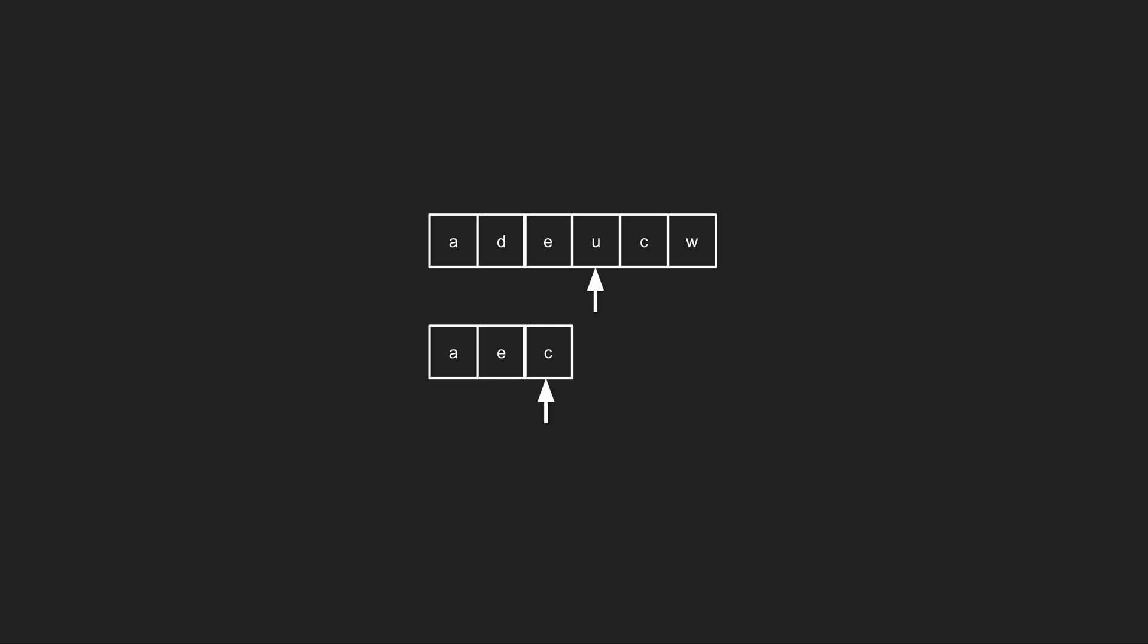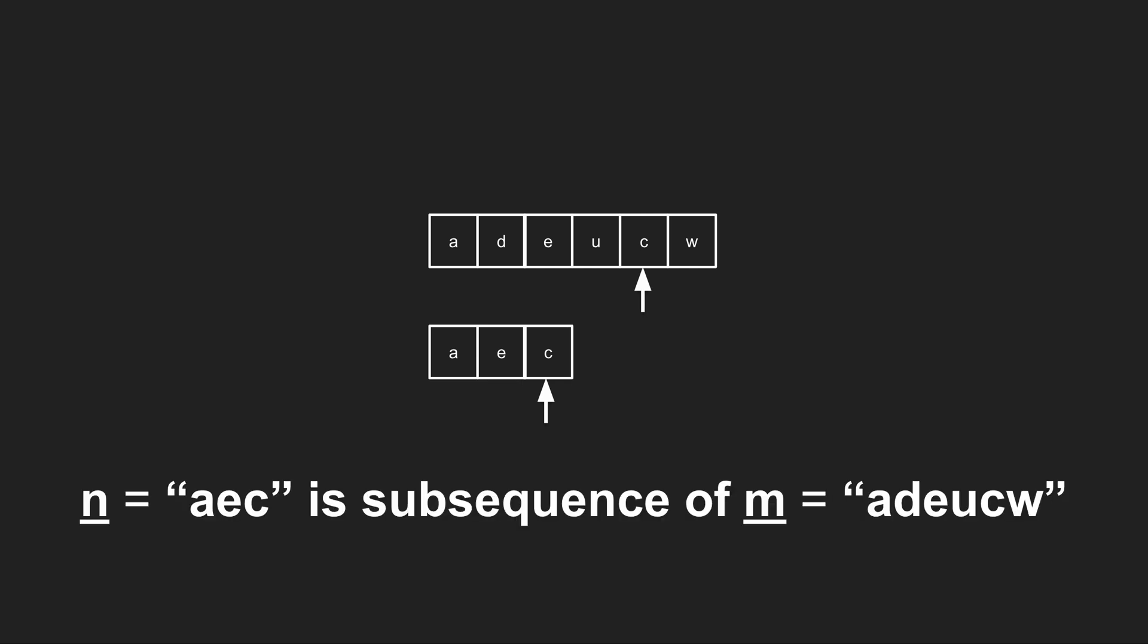Next we compare c with u. Is c equal to u? No, so we move the pointer only in the m string. Now we compare c and c, and c equals c.